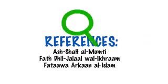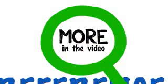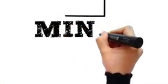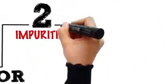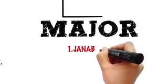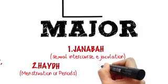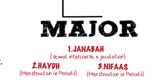So let's begin. There are two kinds of ritual impurities: the minor impurity and the major impurity, which occurs as a result of janabah, hayd, or nifas.